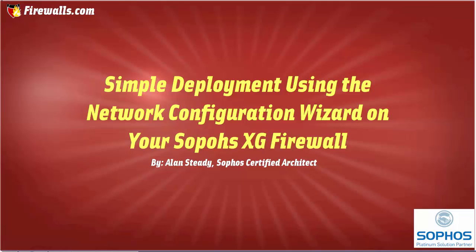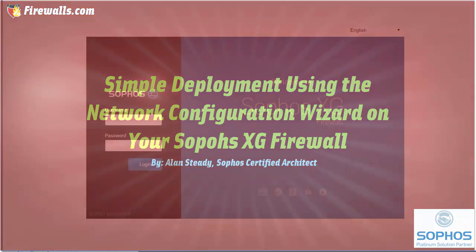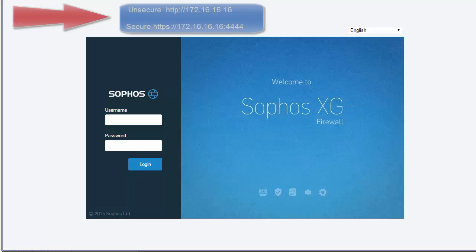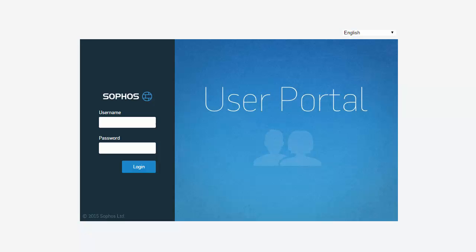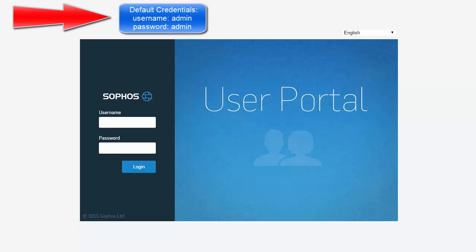Note that the new XG Web User Interface is accessed on 172.16.16.16, which is a little different than our XG boxes. To access the Web Admin Console, we'll open up a web browser and navigate to the IP address of the appliance, 172.16.16.16, using either an unsecured connection over HTTP on port 80, or a secured connection using HTTPS on port 4444, which I always recommend. Go ahead and bypass any certificate errors to proceed to the Web Admin. Here at the welcome screen, we can now log in using the default credentials. The default username and password are both admin for all newly installed XG devices.